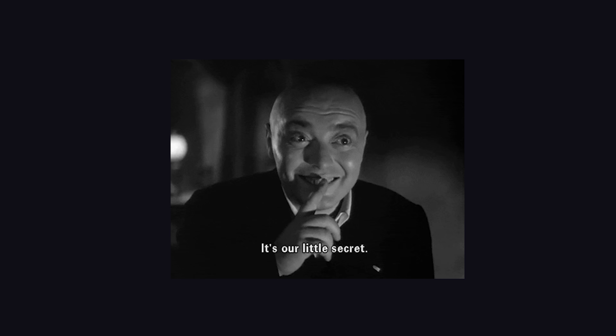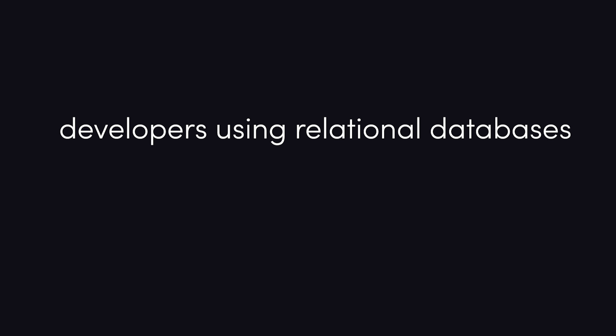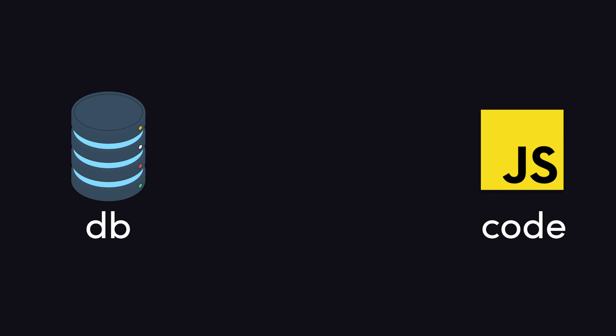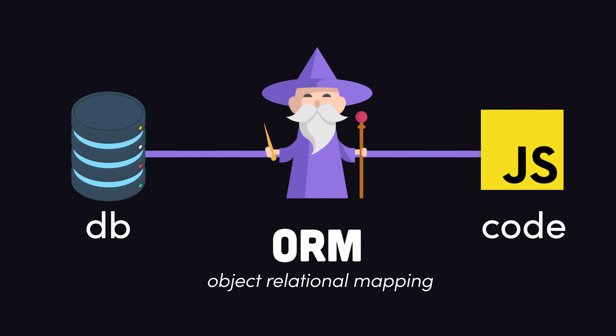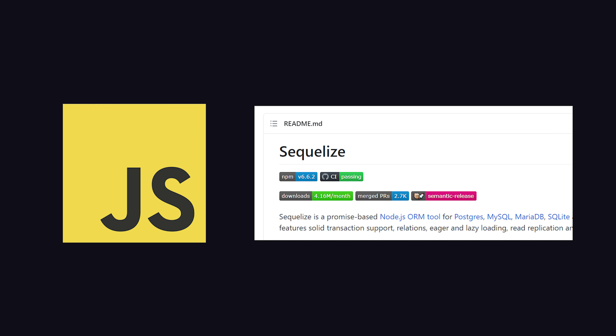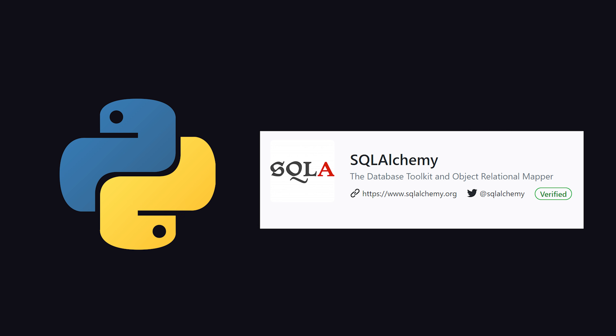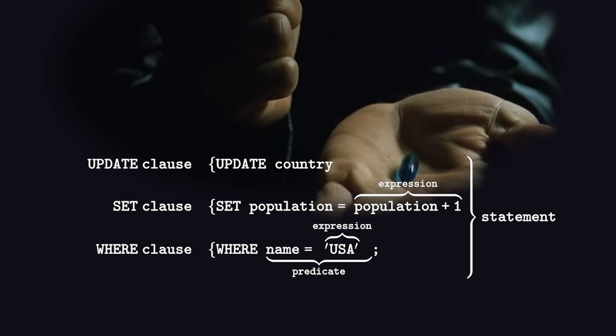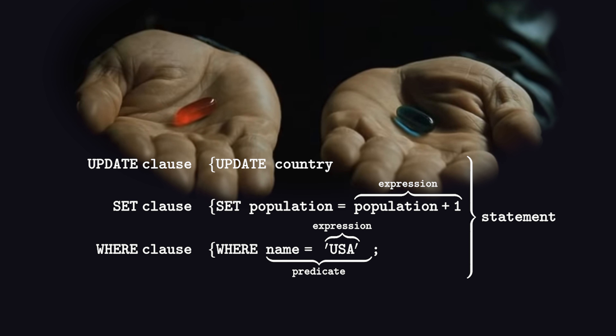Now I need to let you in on a little secret: most developers using relational databases aren't actually writing raw SQL code. More often, they use libraries that perform object relational mapping — tools that allow you to work with relational databases using the object-oriented programming language of your choice. JavaScript has Sequelize, Python has SQLAlchemy, and Ruby on Rails has Active Record. ORMs make it so you never have to touch raw SQL code, which can be great for productivity, but learning how raw SQL works will help you understand some of the magic that an ORM does under the hood. And that's what this video is all about.